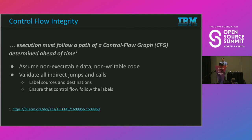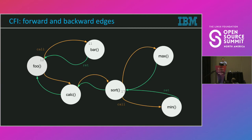Researchers worked hard to see how this can be overcome. One of the things considered a fundamental research study about preventing ROP and similar attacks is control flow integrity. As the original paper stated, execution must follow a path of a control flow graph determined ahead of time, and if there is a violation of that path, we should be able to detect it and prevent further execution. In a sense, if there is a control flow graph, you are executing a call instruction or a RET instruction, and there is no way you should be able to jump into the middle of a function.